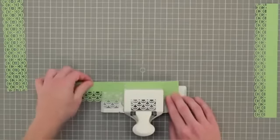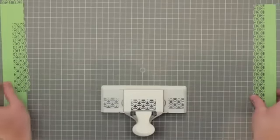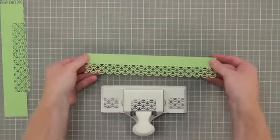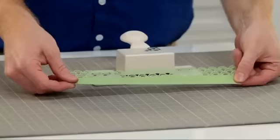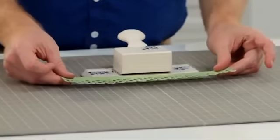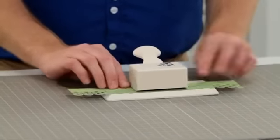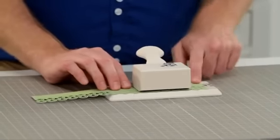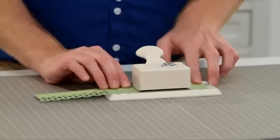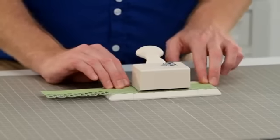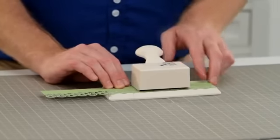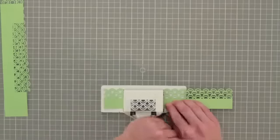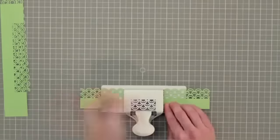You can use this strip as is with just the single edge punched, but we're going to keep going and make a double edge trim. Turn the strip over and insert it back into the punch. Again, line the left edge of the strip up with the left edge of the punch base and make sure the punched pattern lines up with its opposite as marked on the wing to complete your double-edged pattern.